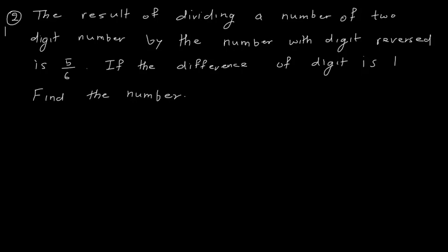Second question: the result of dividing a two-digit number by the number with the digits reversed is 5 by 6. If the difference of digits is 1, find the number. When dividing a number by its digit-reversed version and getting 5 upon 6, it means the number obtained by reversing is greater.